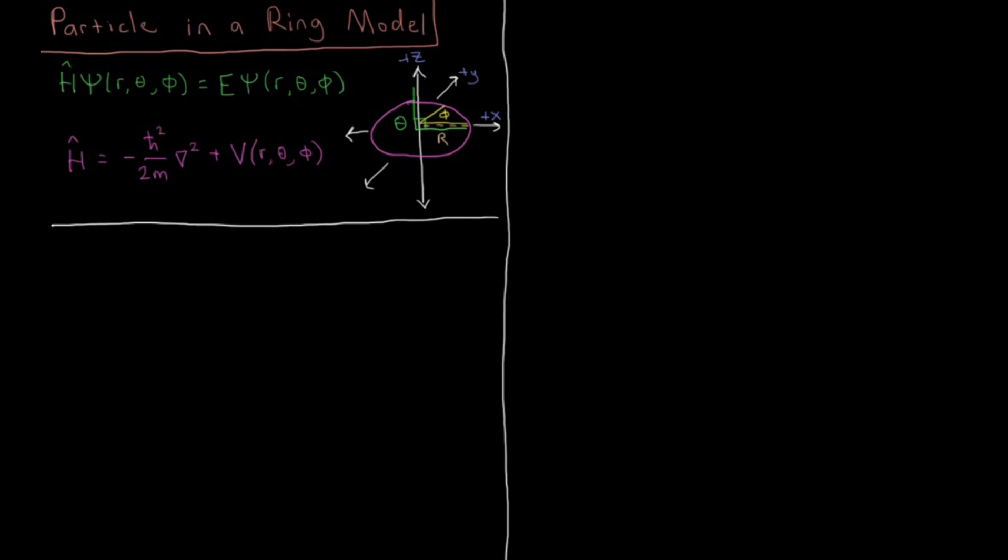In the next couple of videos we're going to look at the particle in a ring model system. This is very similar to the particle in a box in that within a certain region of space you have a zero potential and you have an infinite potential outside of that region.